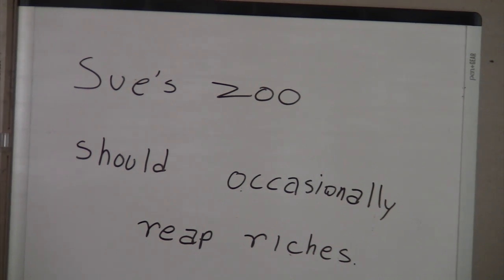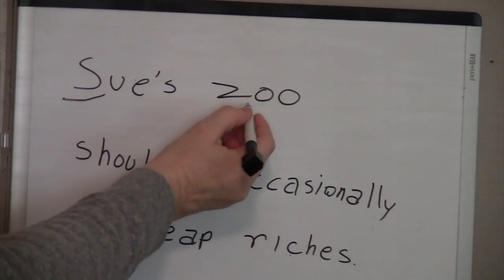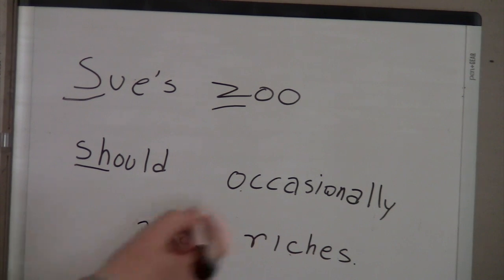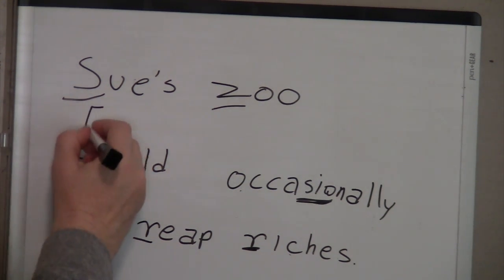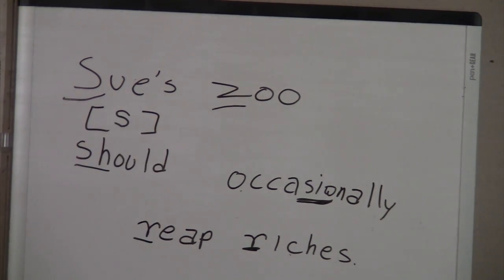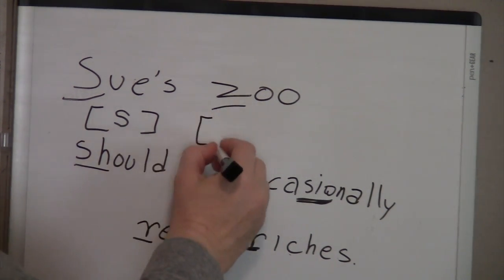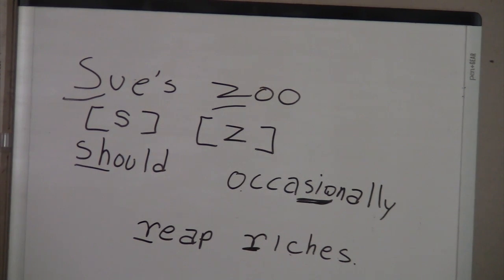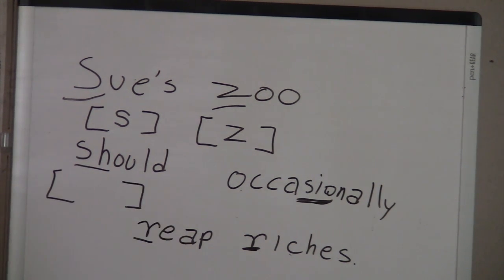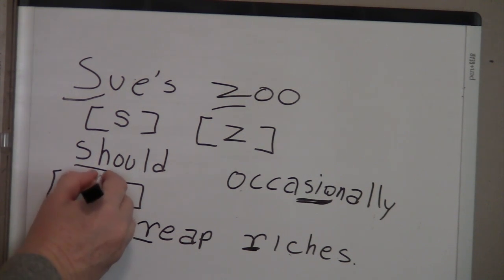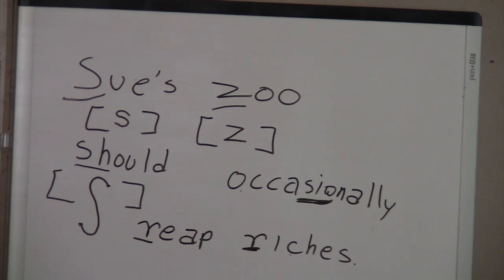Next we have: s as in 'sue,' z as in 'zoo,' and sh as in 'should.' The symbol for the s sound is a lowercase s. The symbol for the z sound is a lowercase z. The symbol for the sh sound — as in 'should,' 'sheep,' 'shower' — is a new symbol: it looks like a big s that goes below the line of the page, where you start, go down below the line, and loop up.